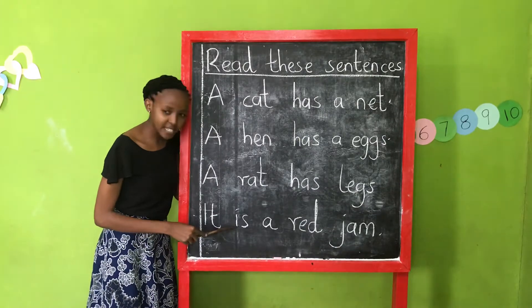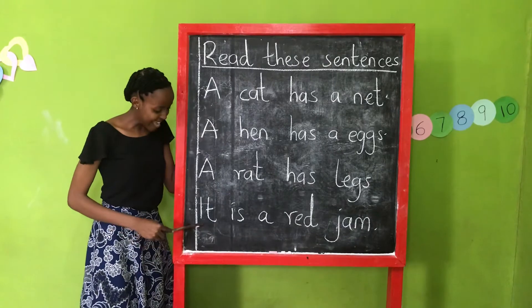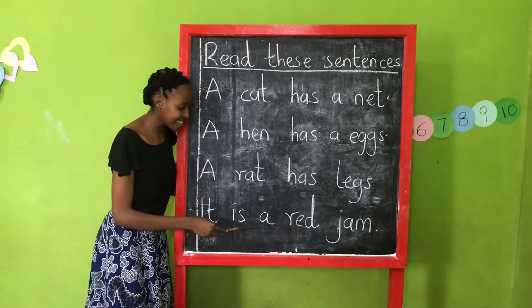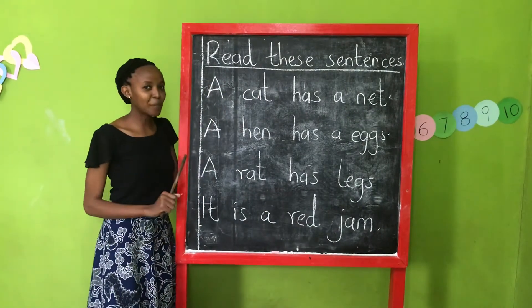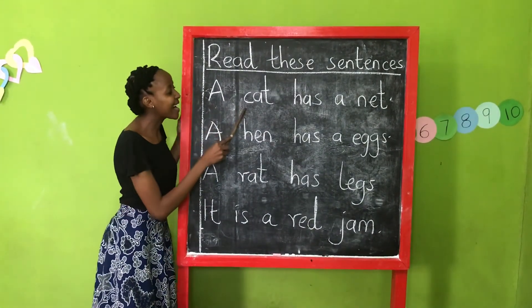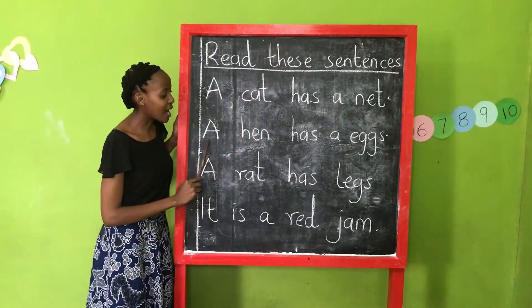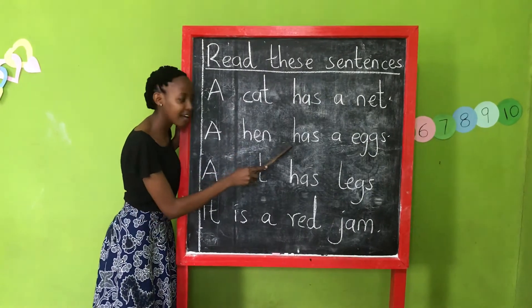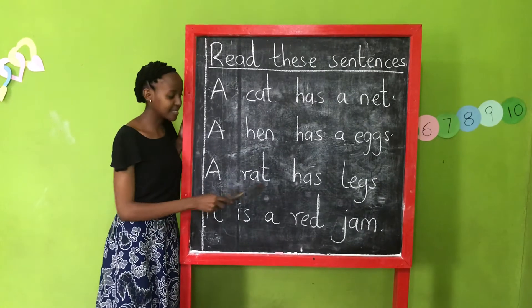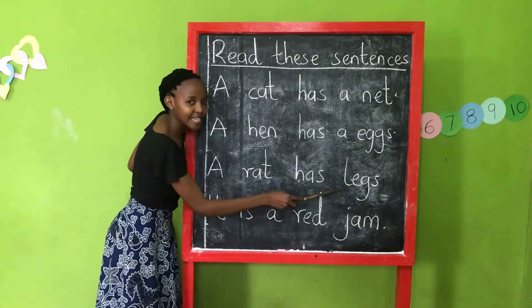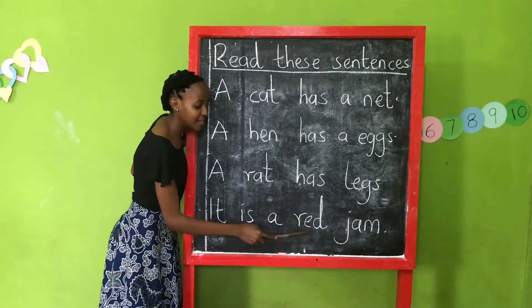It is a red gem. Again. It is a red gem. Very good. Let us repeat again. A cat has a net. A hen has a net. A rat has a net. It is a red gem.